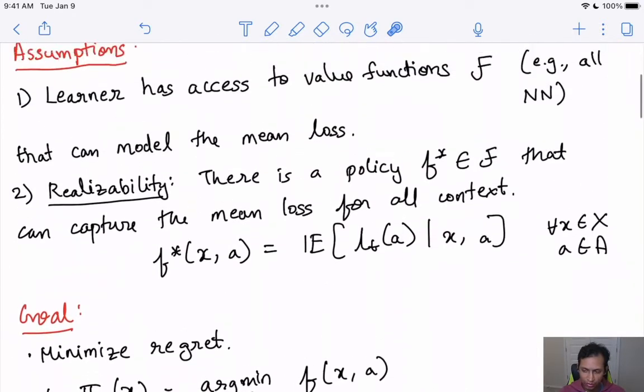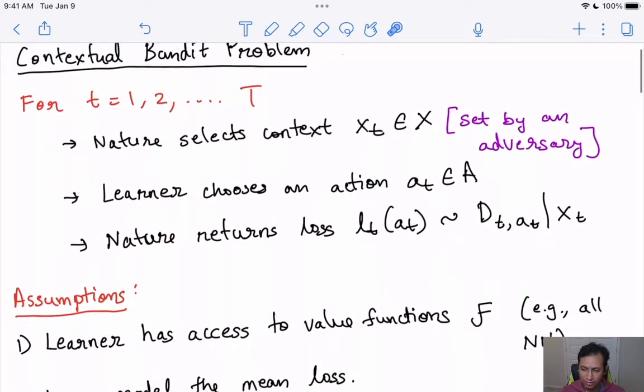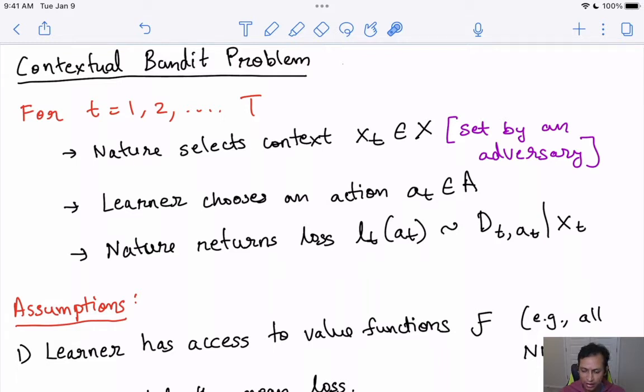Let's start with what the contextual bandit problem is. It's a game between nature and learner that goes in t steps. At each time step t, nature first selects a context xt from set X. This xt can actually be set by an adversary, though for simplicity we'll assume this adversary is non-adaptive. After observing context xt, the learner chooses an action at from set A, and then nature returns a loss lt(at) sampled from a distribution dependent on time step t and action at, conditioned on context xt.